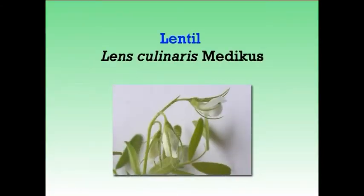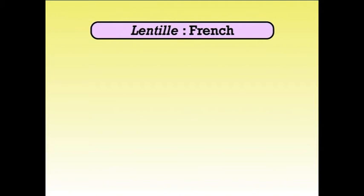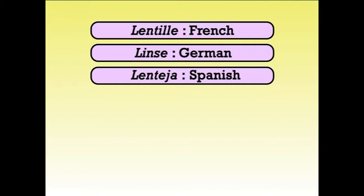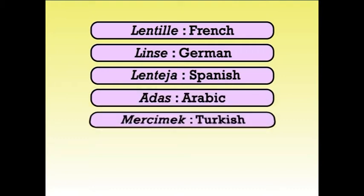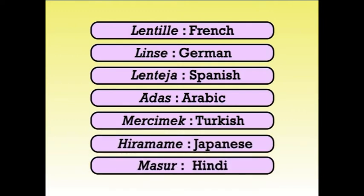Today we are going to discuss about lentil, which is one of the most important pulse crops in India and the world. Lentil, that is Lens culinaris medicus, is one of man's oldest food crops. Lens is a Latin word which refers to the shape of the seed of lentil. Lentil is known by different names in various countries such as lentille in French, linse in German, lentil in Spanish, adas in Arabic, marsimek in Turkish, hiramame in Japanese, and mashur in Hindi.